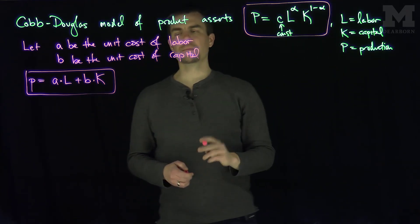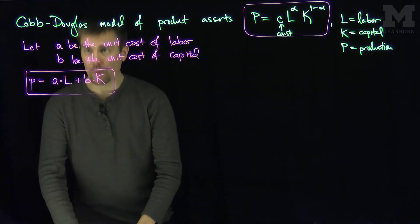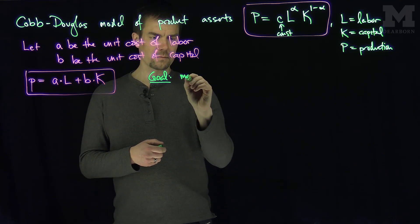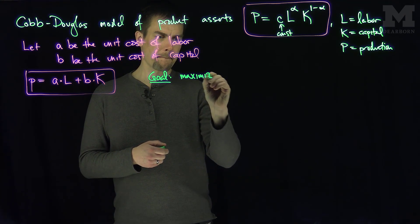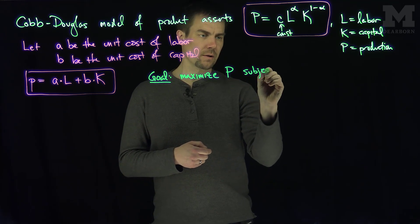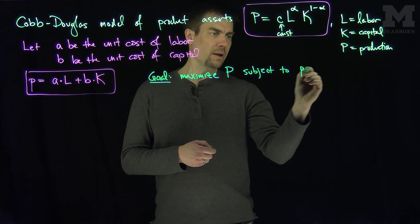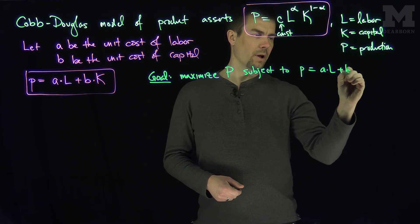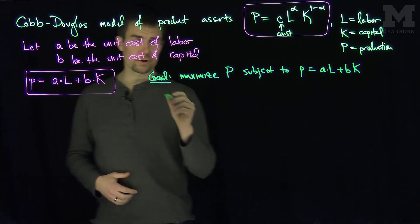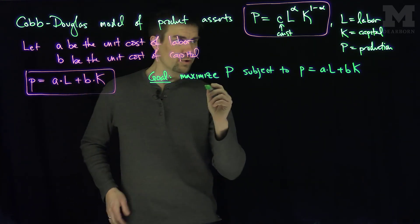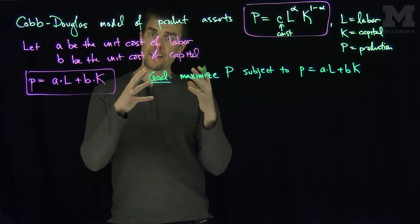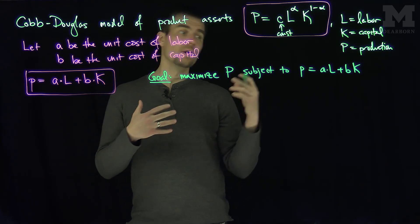Our goal is to maximize P, the production, subject to the constraint that p is equal to AL plus BK. This is the natural setup for Lagrange multipliers, which asserts that the gradient of the function you're trying to optimize is proportional to the gradient of the constraint.